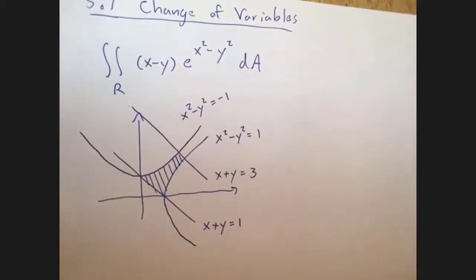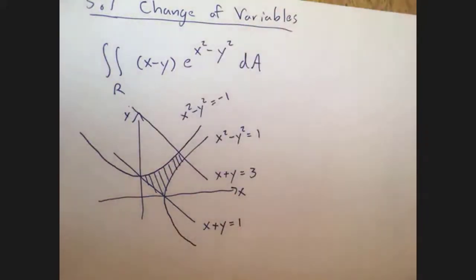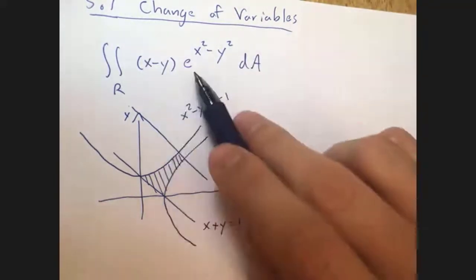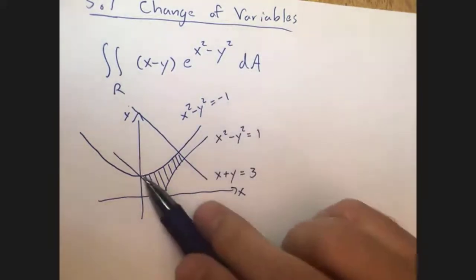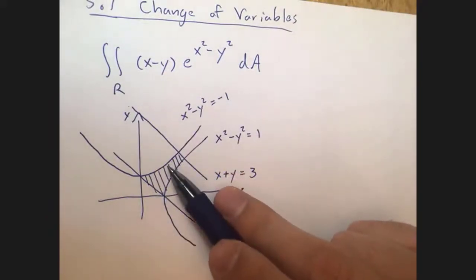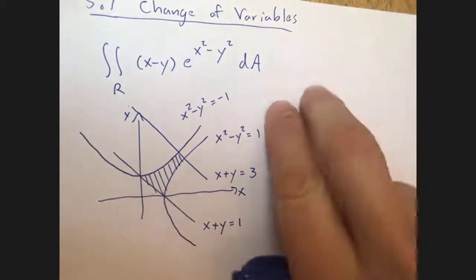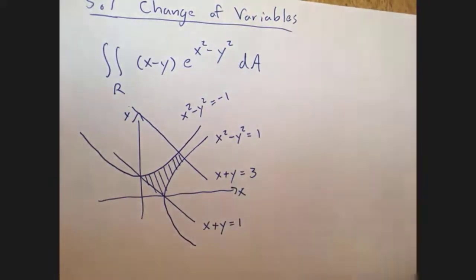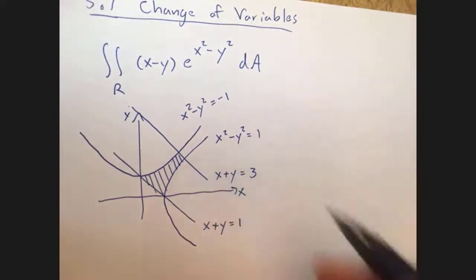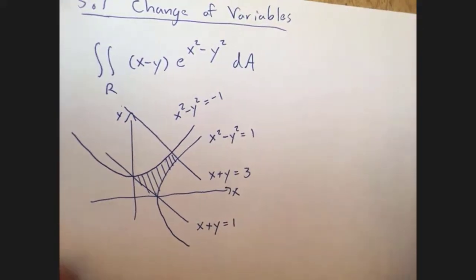This is not an easy integral to set up in xy coordinates. It's going to be difficult to find the antiderivative in these coordinates, and defining the bounds for a region like this is going to be complicated. The book talks about type one and type two regions, where you set up dx dy or dy dx — but this is neither of those types, so it's really quite complicated to do it that way.